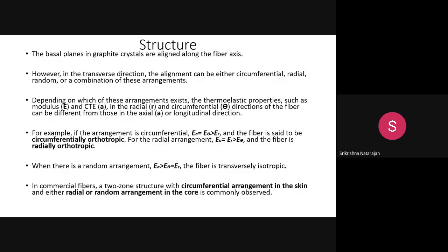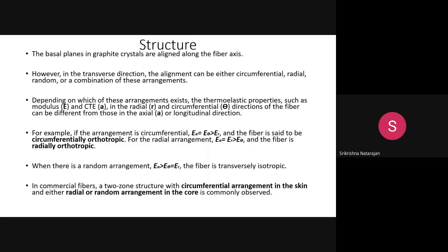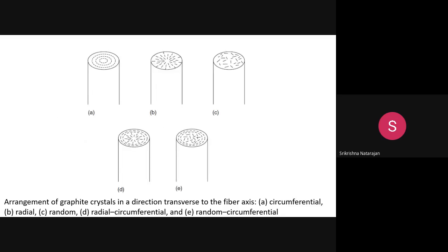Commercially available carbon fibers have a two-zone structure: circumferential arrangement in the skin and either radial or random arrangement in the core. So the skin has circumferential arrangement and the inner core has a radial or random arrangement. This two-zone structure results from the different arrangements of graphite crystals in the axial and transverse directions.